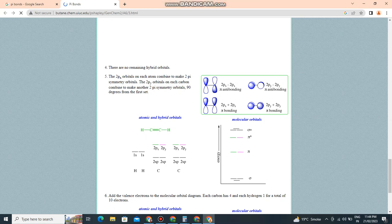The 2px orbitals on each atom combine to make two pi symmetry orbitals. The 2py orbitals on each carbon combine to make another two pi symmetry orbitals oriented 90 degrees from the first set.